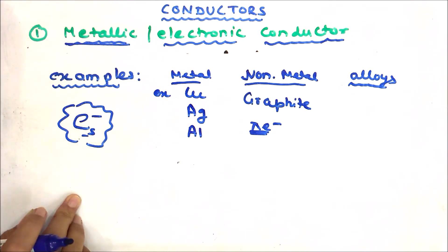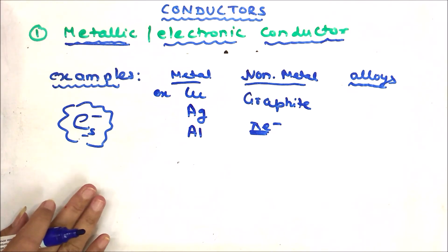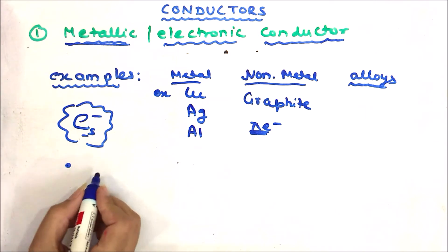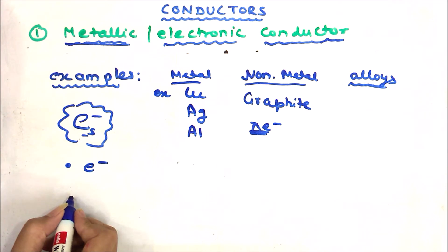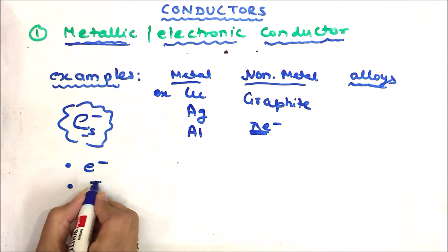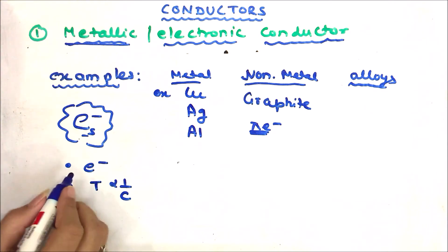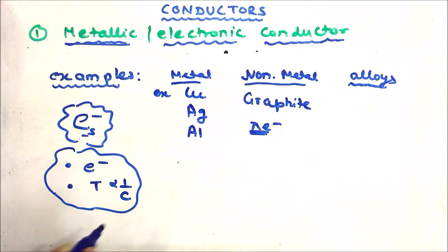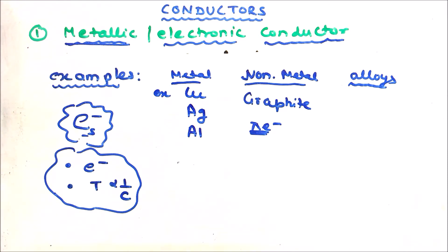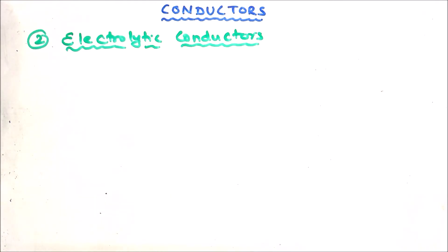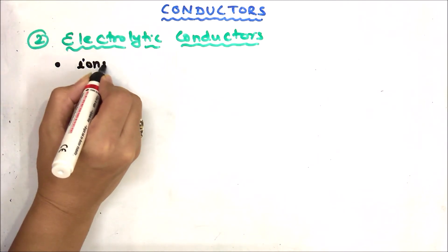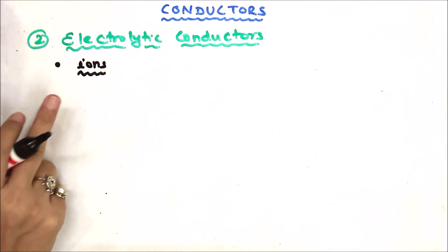Now let's move to electrolytic conductors. To summarize metallic conductors: electrons are responsible for the electric current, conductivity decreases with temperature, and there is no chemical decomposition. In electrolytic conductors, free ions are responsible for the flow of current.